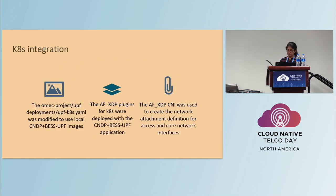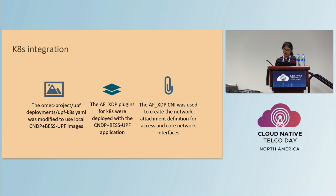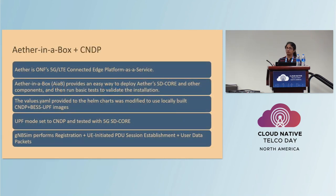Now let's talk about the Kubernetes integration. When we initially started out, we used the Docker setup script which is in the OMEC-UPF repo. Once we had that working and had confidence that it worked, we moved on to the Kubernetes integration. The OMEC project has a UPF deployment YAML, and we took that and modified it to use the local CNDP plus BESS-UPF images. The AF-XDP plugins for Kubernetes were also deployed with the CNDP BESS-UPF application. The AF-XDP CNI was used to create the network attachment definition for the access and the core networking interfaces.